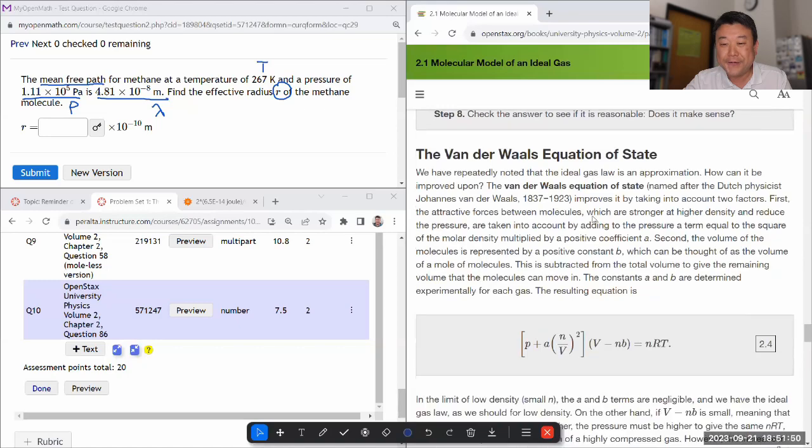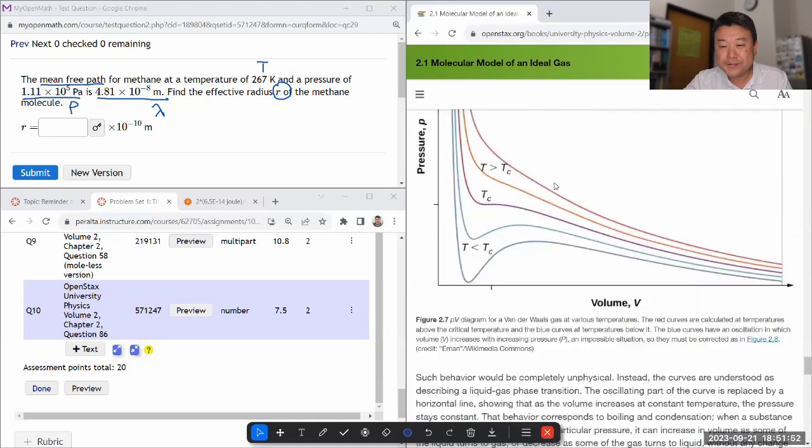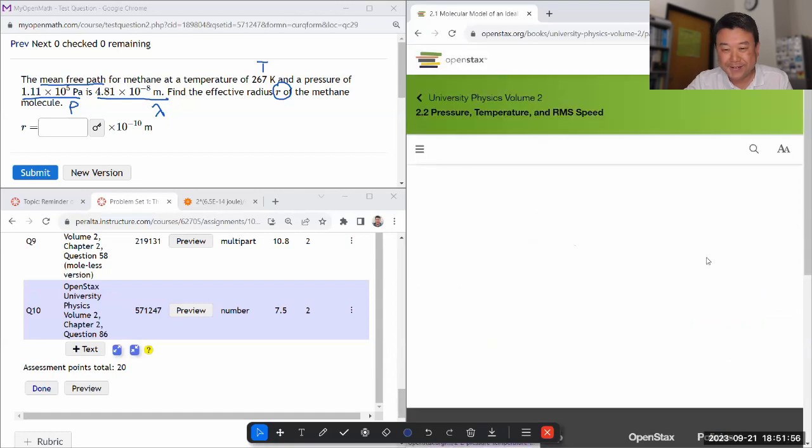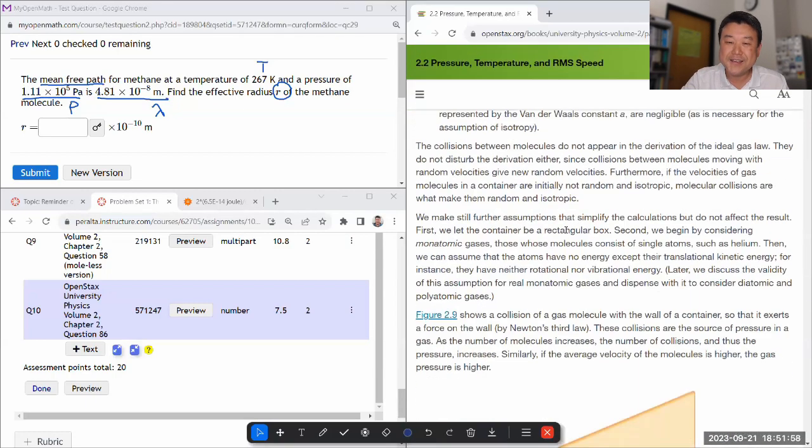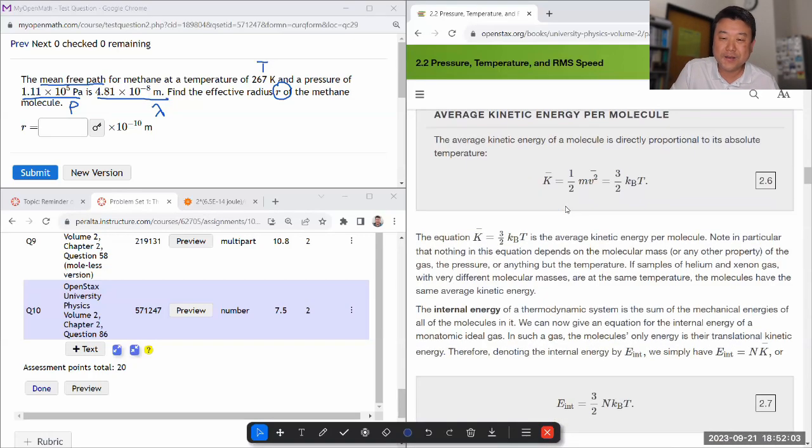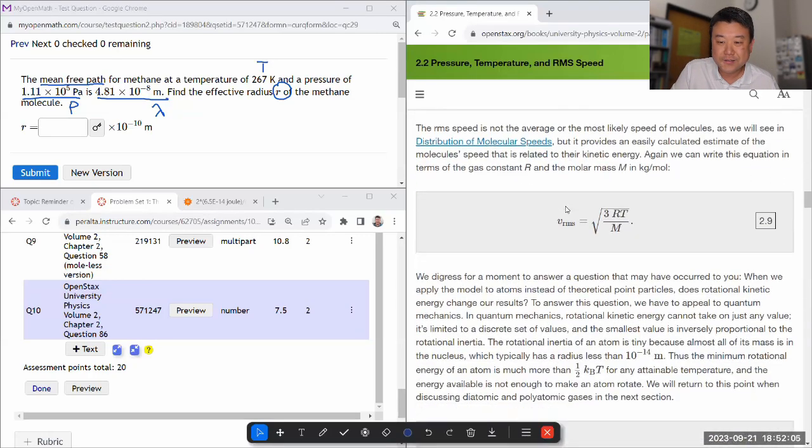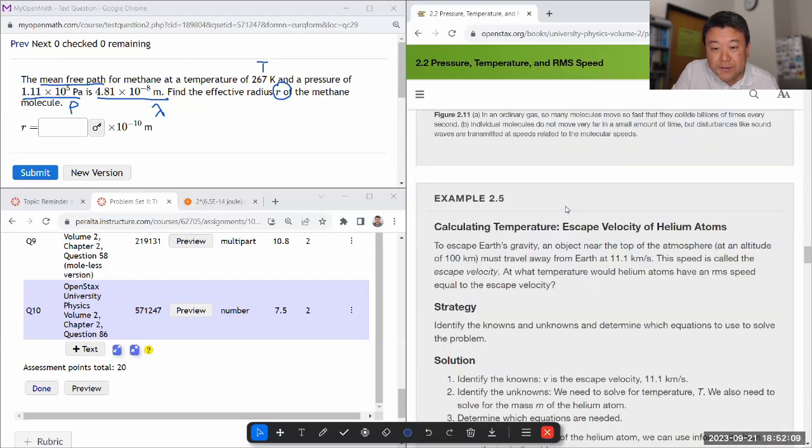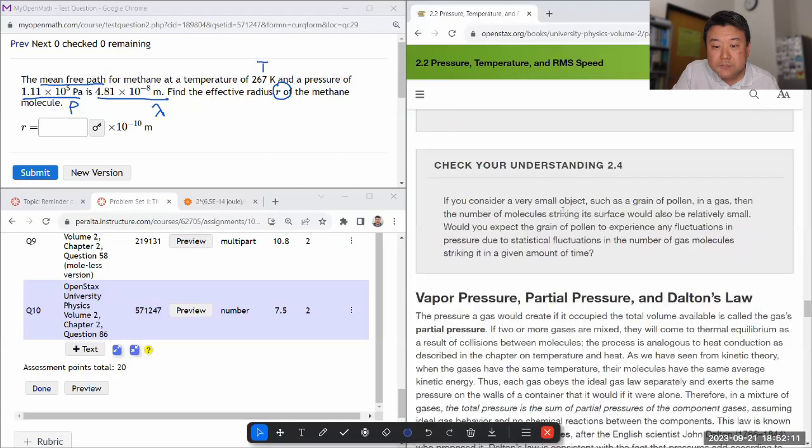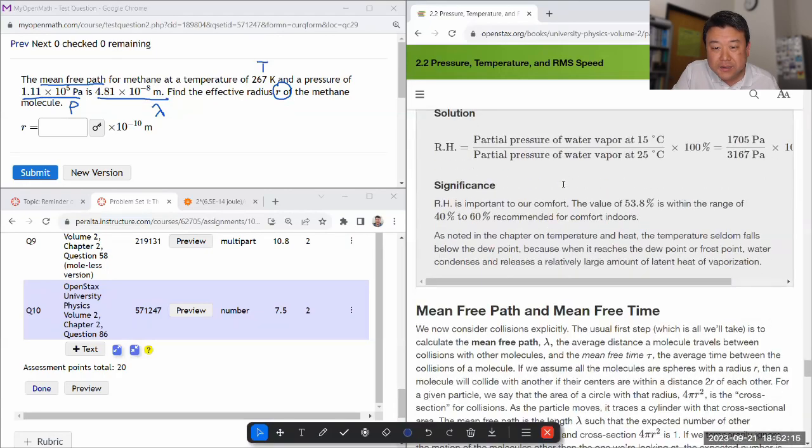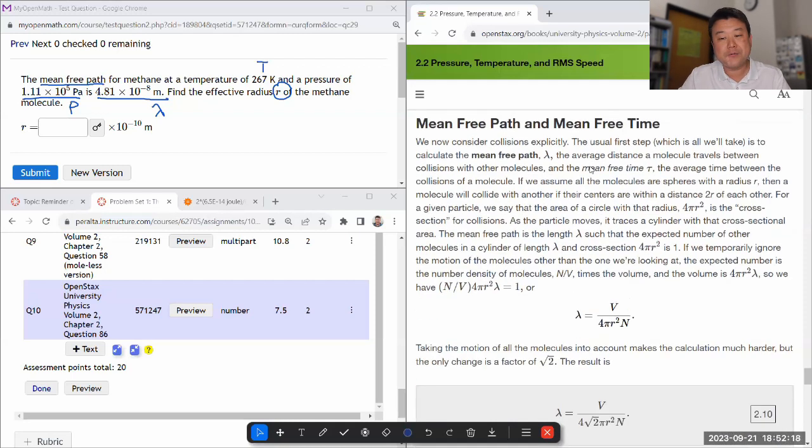Let me look at the next section, maybe it's there. If it's not here I might use the search function to find it. Okay, there is mean free path and mean free time.